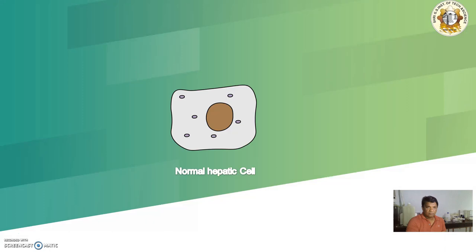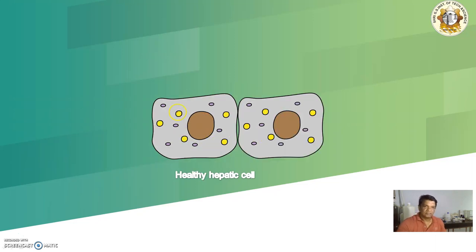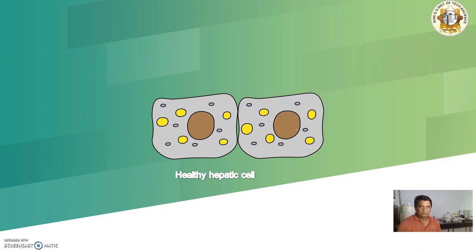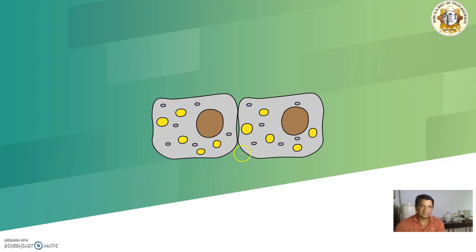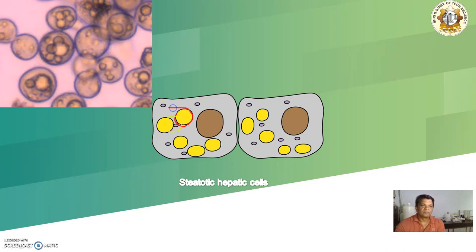Let us see what happens in fatty liver. This is a normal hepatic cell — it has a nice nucleus. A normal hepatic cell has a certain amount of lipid inside it. Nearly about two to five percent of lipid in your hepatic cells is normal, and the lipid moves in and out of the liver without any problem. When there is impairment due to alcohol, this lipid starts getting deposited in your liver and begins to grow.